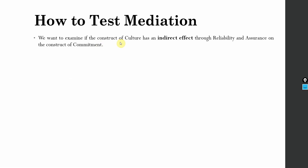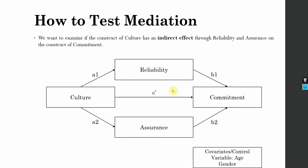We want to examine if the construct of culture has an indirect effect through reliability and assurance. When we use the word 'through', it means that reliability and assurance are our mediators, mediating the relationship between culture and commitment. Here is my proposed model where the covariates are age and gender.